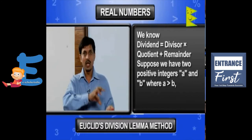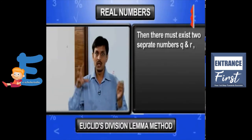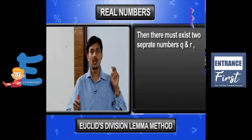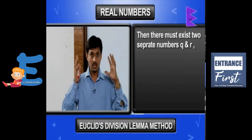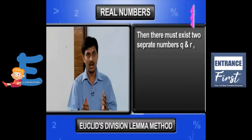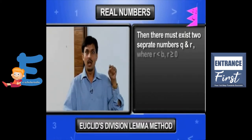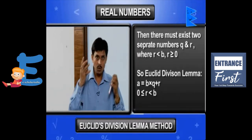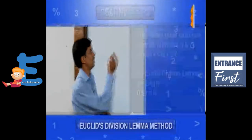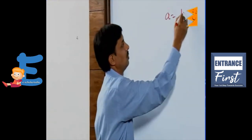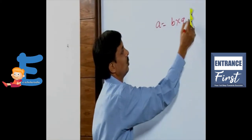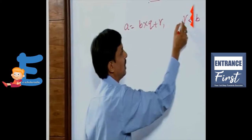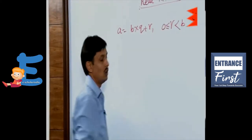Where A is greater than B, then there must exist two separate numbers Q and R, such that the remainder R is definitely less than B but greater than or equal to zero. So we can write it as: A equals B into Q plus R, where R is less than B and greater than or equal to zero.